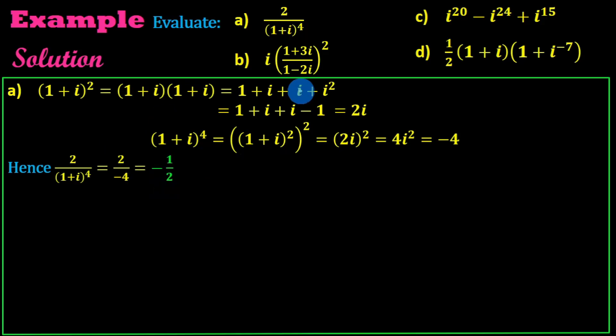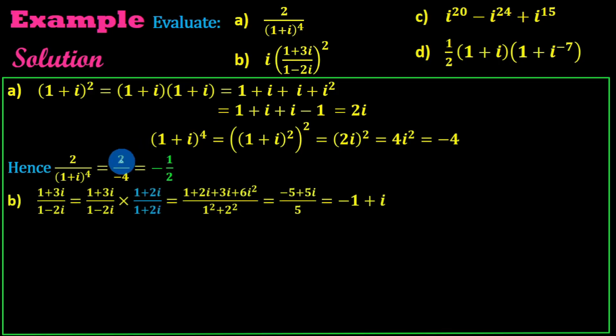So here we have to solve this problem. We need to solve: 1 plus 3i over 1 minus 2i, the whole to the power of 2, or squared.